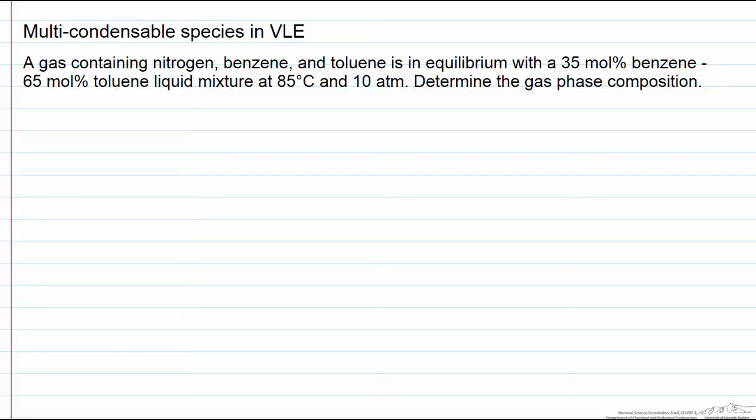In this screencast we're going to solve a vapor-liquid equilibrium problem using Raoult's law. However, there's a little twist in this one as we have three species: nitrogen, benzene, as well as toluene, and I'm going to abbreviate these.